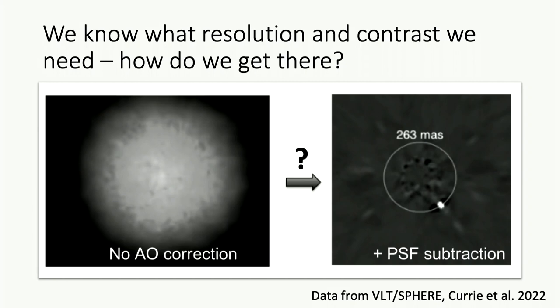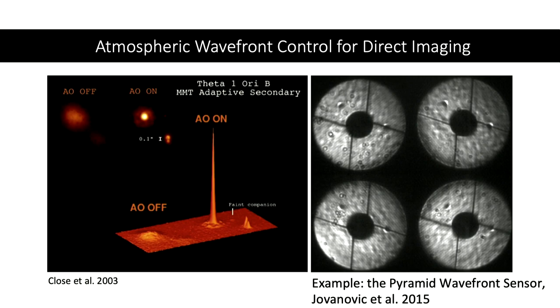So we know what resolution and contrast we need — how do we get there? How do we go from a seeing-limited blob at an 8 to 10 meter telescope to removing all the starlight and picking out a companion? This takes a lot of technology, hardware, and software. First, to get the resolution we need: you can put your telescope in space, or use adaptive optics to control the wavefront from your atmosphere on the ground.